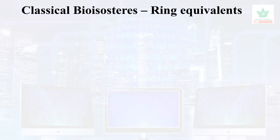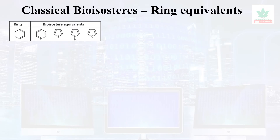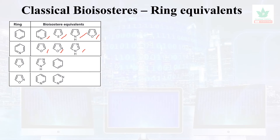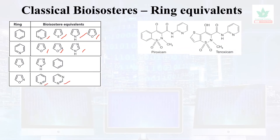For ring equivalents, benzene could be replaced by pyridine, thiophene, pyrrole, or furan. The equivalents for pyridine are furan, oxazole, and imidazole. The equivalents for furan are imidazole and benzene. The equivalents for oxazole are pyrimidine and pyridine.